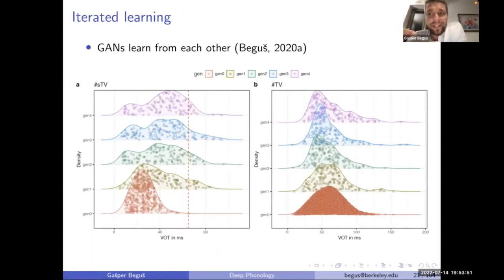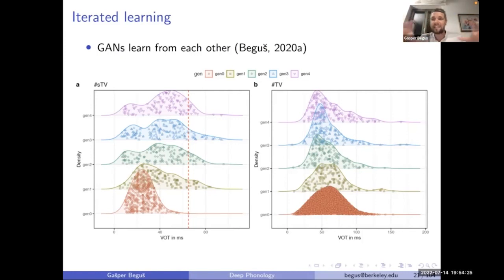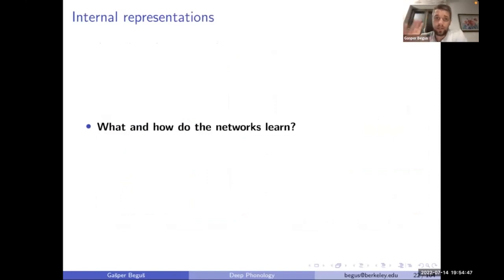If you iteratively train these models over generations — where the second generation learns from the first generation's outputs, and the third from the second — you can model language change and sound change. Combining deep learning with iterative learning gives a nice way to model sound change from acoustics. You see VOT gradually becoming longer in the S-condition across generations, while remaining stable in the non-S condition.